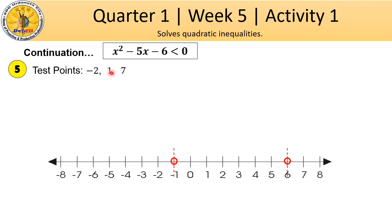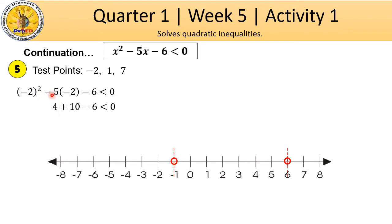These are the test points we're going to use to evaluate the quadratic inequality. For negative 2, change all x to negative 2. Negative 2 squared is positive 4. Negative 5 times negative 2 is positive 10. So, 4 plus 10 minus 6 is positive 8, which should be less than 0. Is 8 less than 0? No! So this region is false, or not part of the solution.